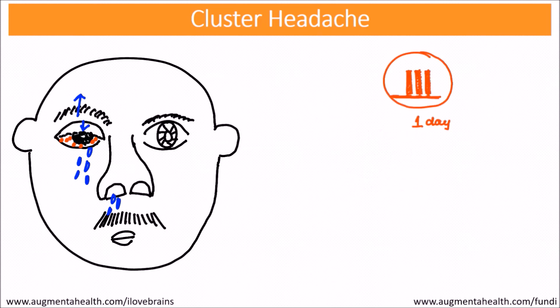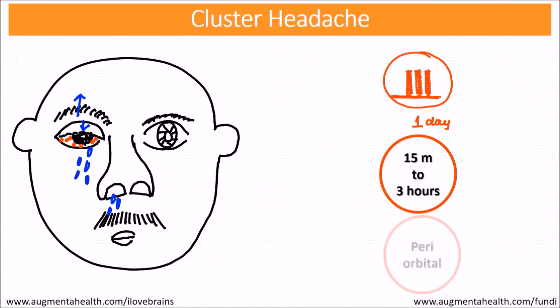A cluster headache can typically have one to a couple of episodes a day. Each episode can last for about 15 minutes to 3 hours. The periorbital area is the commonest location where cluster headache is localized.